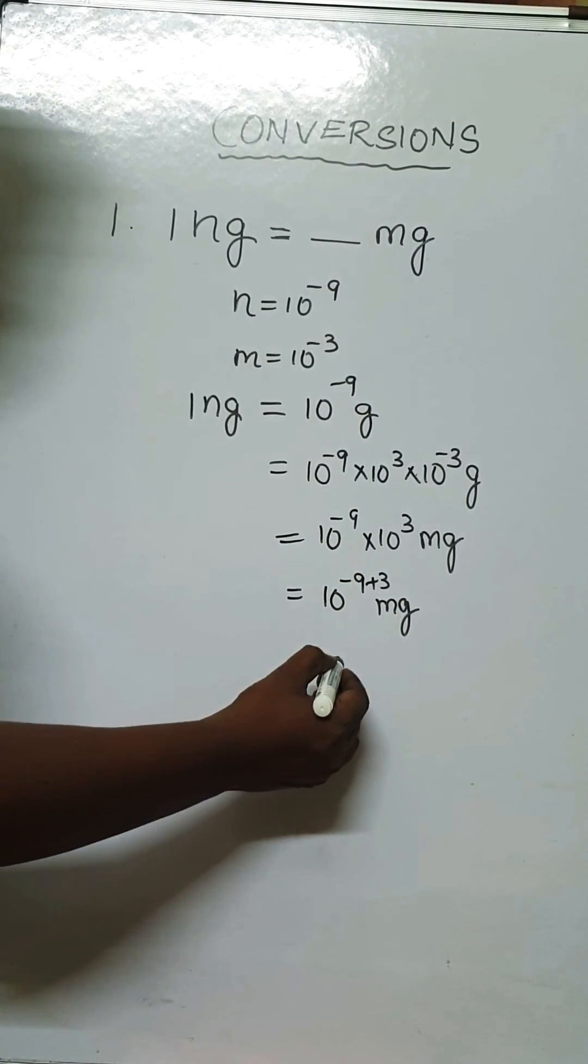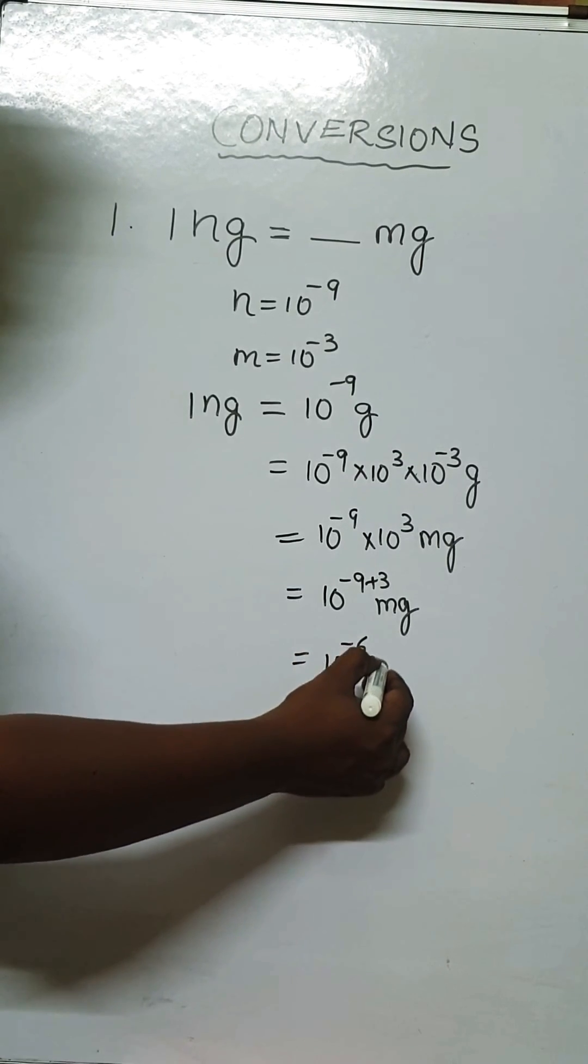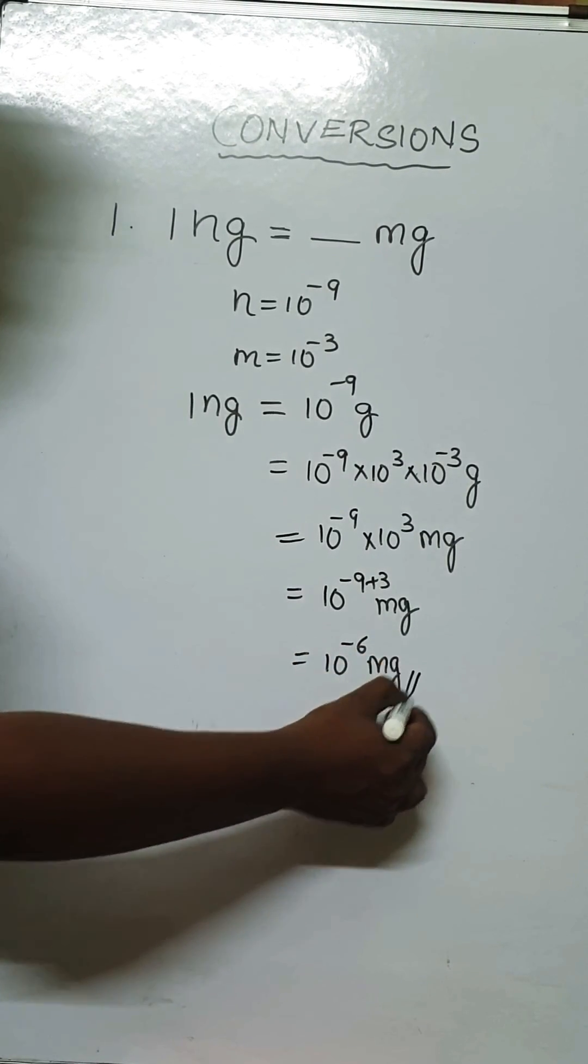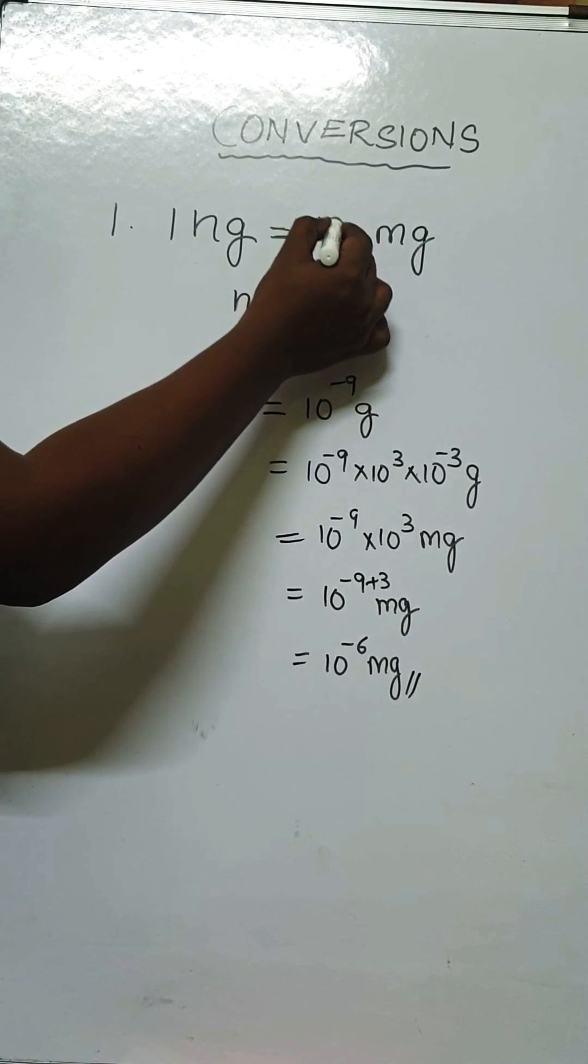10 power minus 9 plus 3 is minus 6. So, 10 power minus 6 milligram. So the answer is 10 power minus 6.